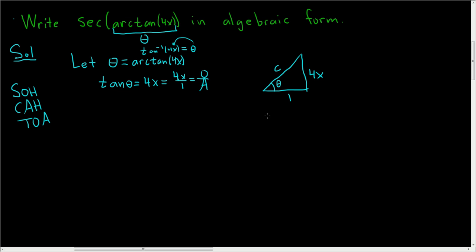And now we can use the Pythagorean theorem. So c squared is equal to 1 squared plus 4x squared. So c is equal to the square root of 1 plus 16x squared. You square the 4 and you square the x.